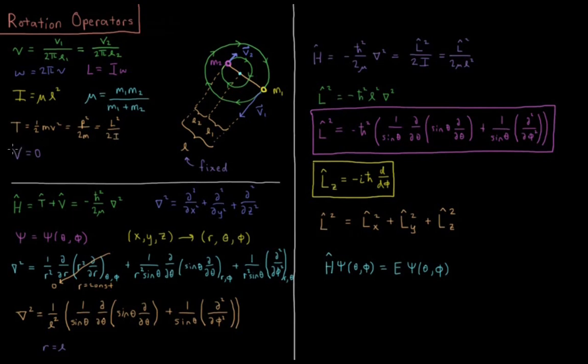And our potential energy is going to be zero for everywhere in space. The only restriction is that the center of mass and the bond length are both fixed. The molecule can rotate anywhere at once within those restrictions.